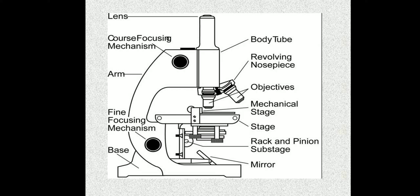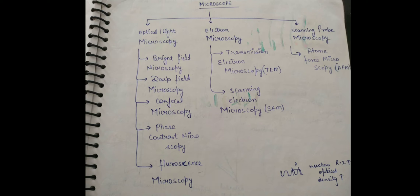On the specimen, we have our objective lens. The objective lens comes in types like 10x, 50x, 40x, 45x, 60x, and 100x. The objective lens forms an image, and that image is viewed through the ocular lens or eyepiece. That was the basic principle of the microscope.